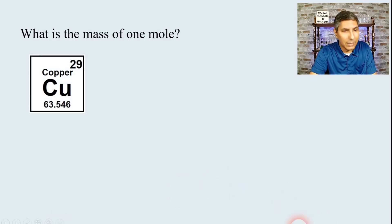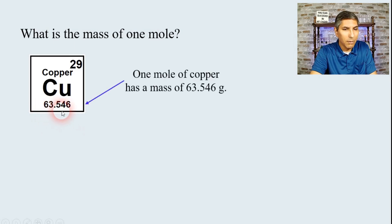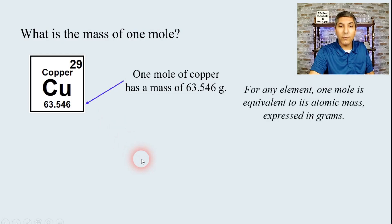And fortunately, the periodic table makes this quite easy for us. If we take any periodic table square, all we have to do is look at the atomic mass. So in the case of copper, the mass of one mole of that element is just 63.546 grams. So basically, whatever the atomic mass is expressed in grams is the mass of one mole of that element. So pretty easy to do that. Pretty easy to determine that.